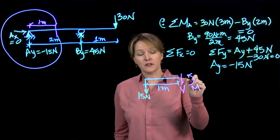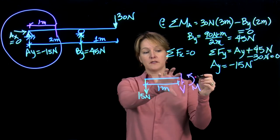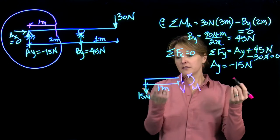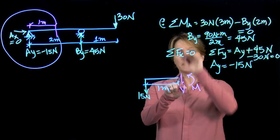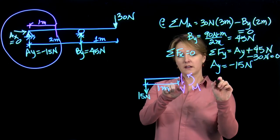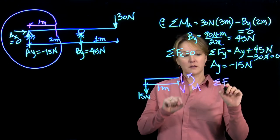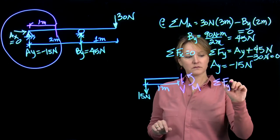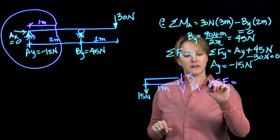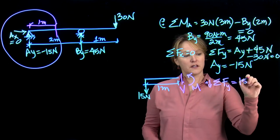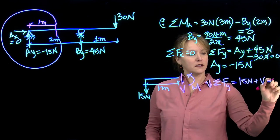I can find those by equilibrium, just like I've been doing for the reactions. So I can first sum my forces in the Y direction, and I have both of them acting downward. So 15 newtons plus V equals 0.